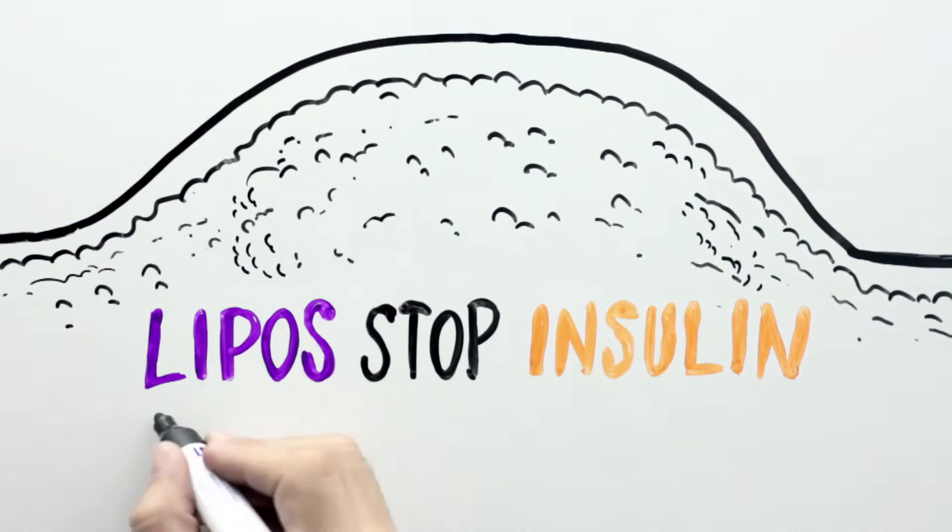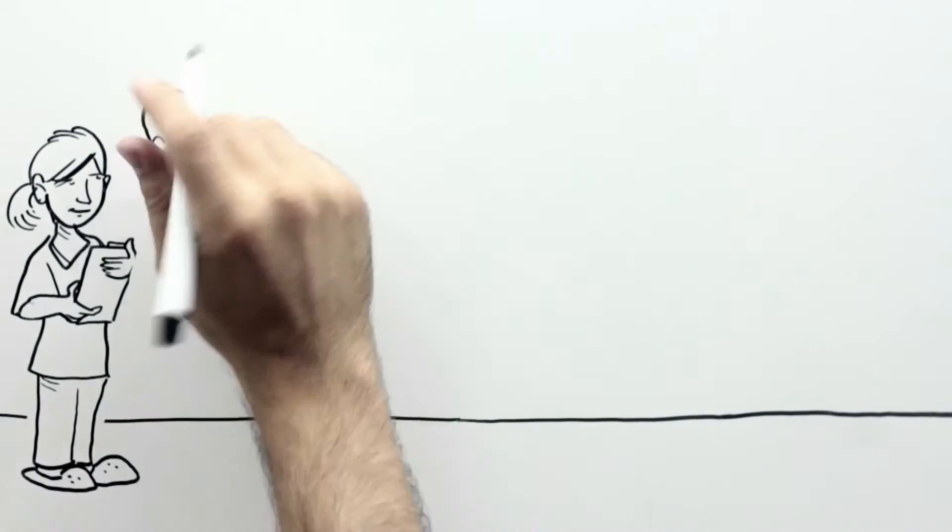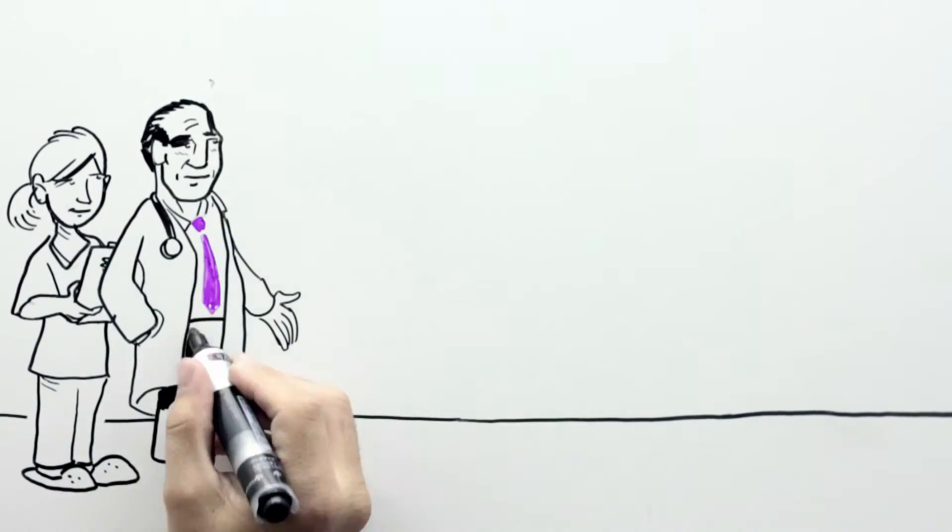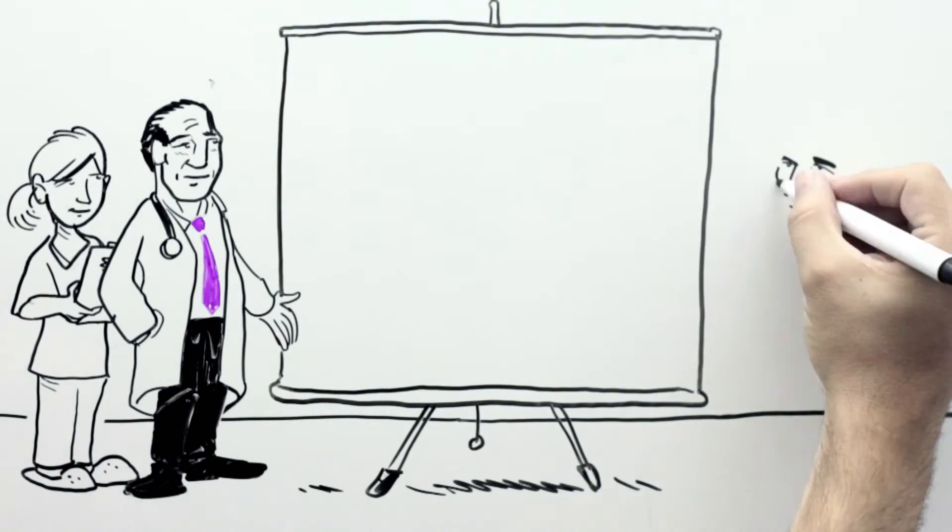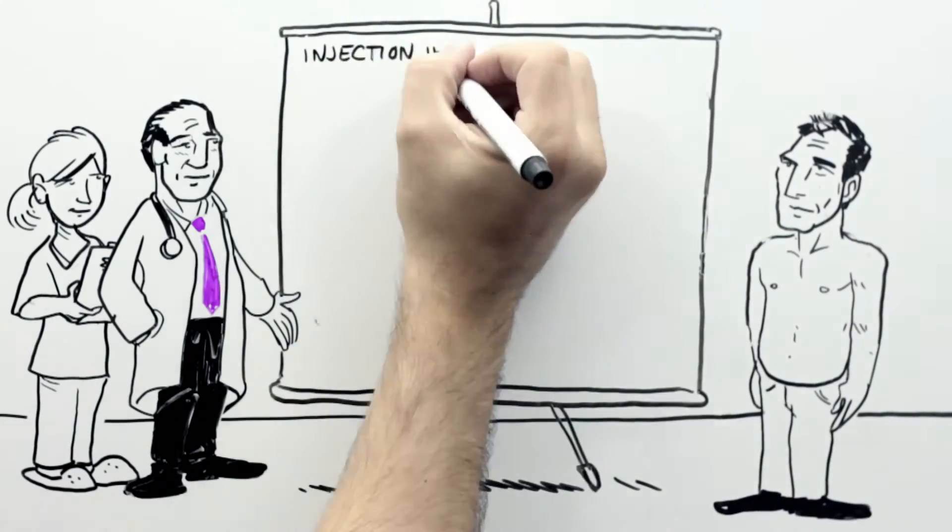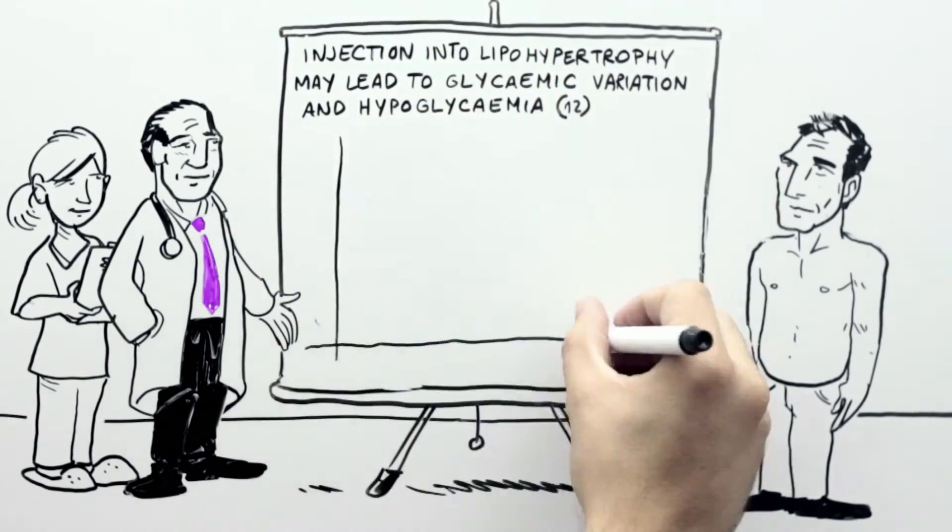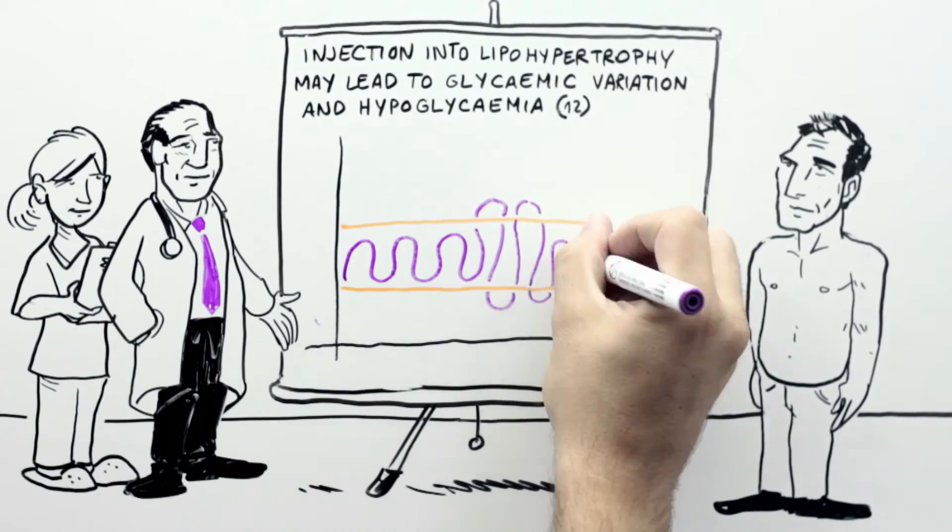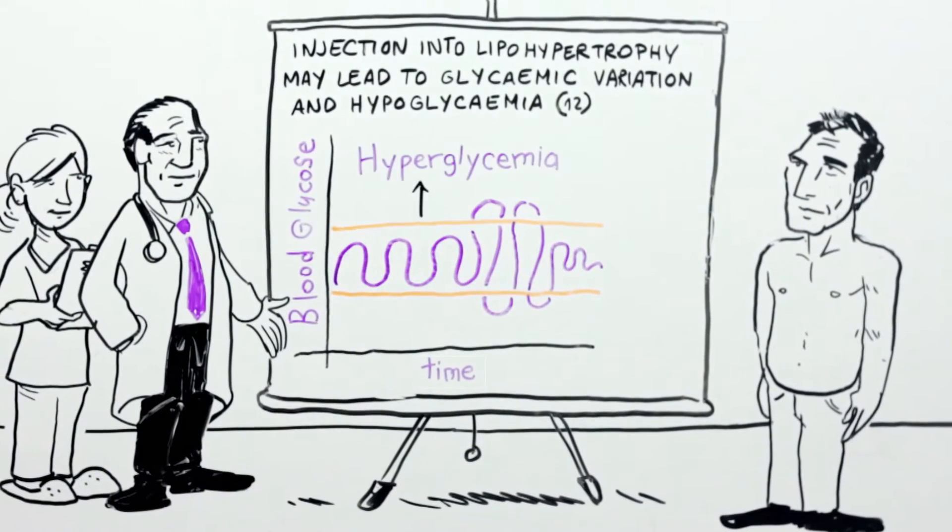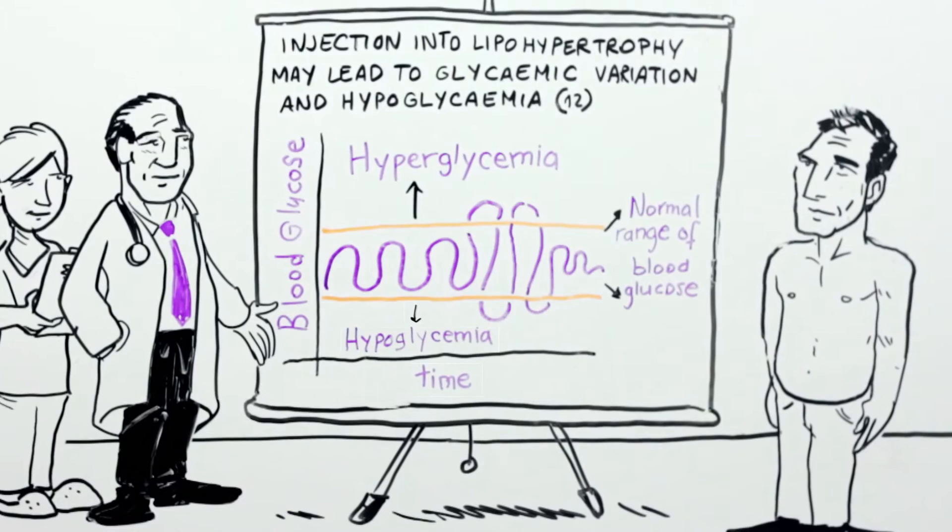Lipos stop insulin working properly. It is absorbed erratically and at a slower rate, which can cause your body to use more insulin than it really needs. This may result in erratic blood glucose control with fluctuations from one day to the next and a greater risk of hypoglycemia.